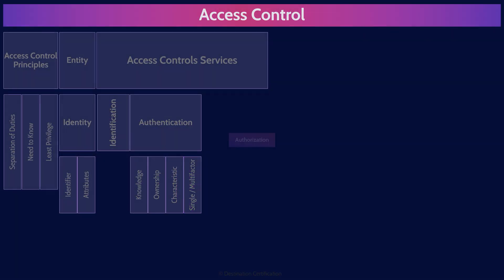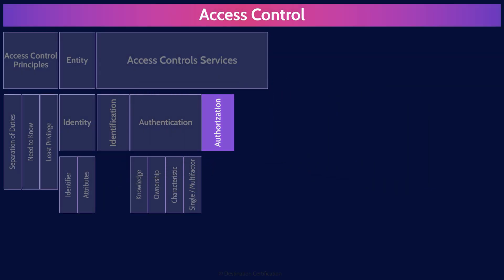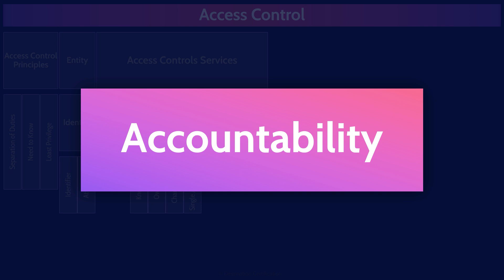Authorization is where we define a user's specific access within a system — what they are authorized to access — and this is where we apply principles like least privilege, need to know, and segregation of duties. The final and most important access control service is accountability: we must ensure that users are accountable for their actions in the system and we need to know who is doing what.